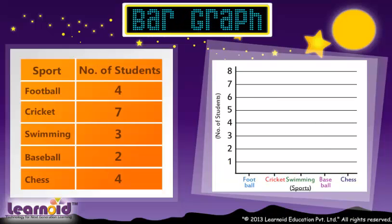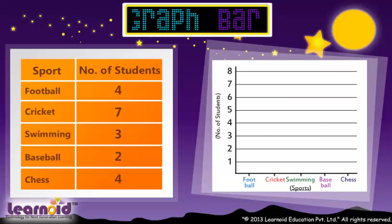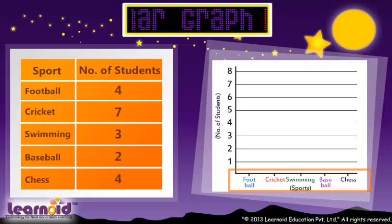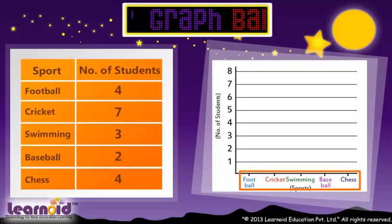To draw a Bar Graph, we will draw a horizontal line and mark the name of sports.